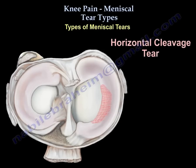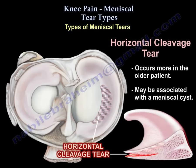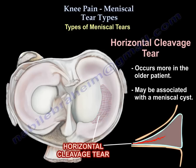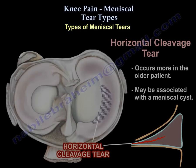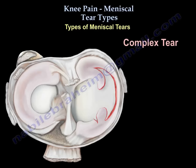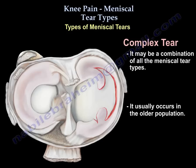The horizontal tear occurs more in the older population and may be associated with meniscal cysts. Complex tear may be a combination of all these types and usually occurs in the older population as well.